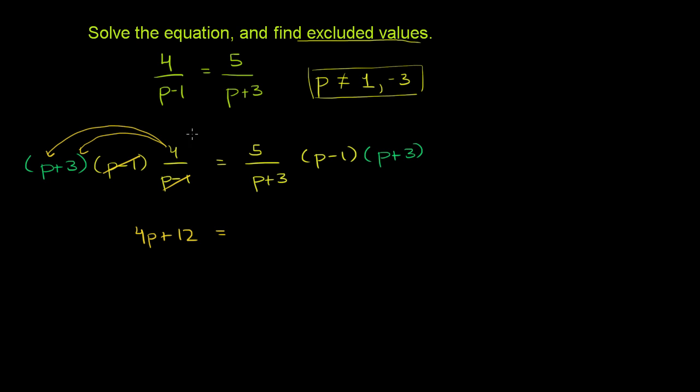And then the right-hand side, you have a p plus 3 canceling with a p plus 3. This is p plus 3 divided by p plus 3. And all you're left with is 5 times p minus 1. If you distribute the 5, you get 5p minus 5.